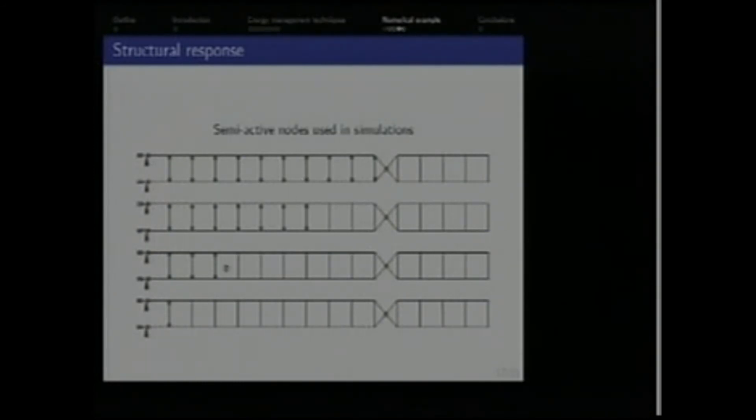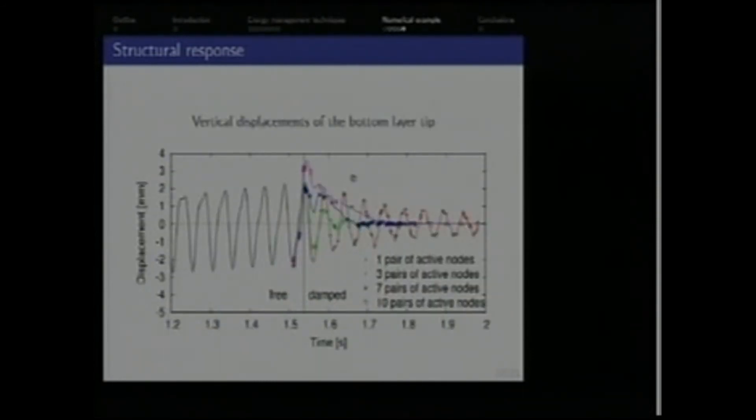We have tested also the same approach for a larger number of semi-active nodes used in simulations starting from one and going up to seven pairs of nodes. And here are the results. Even with a single pair of semi-active nodes, we are able to quite quickly decrease the amplitude of vertical vibrations two-fold. So these results are quite ad hoc and applied for a special case, but they are quite promising. So we hope we will get much more general and better results by performing formal analysis of the problem.